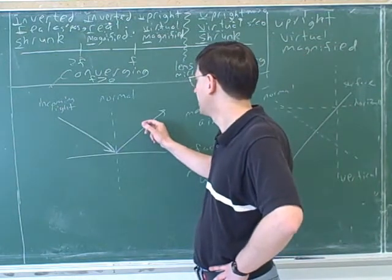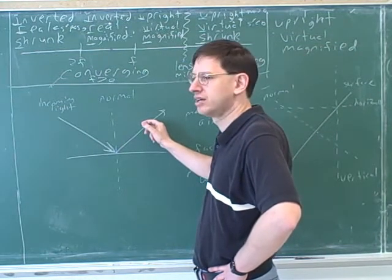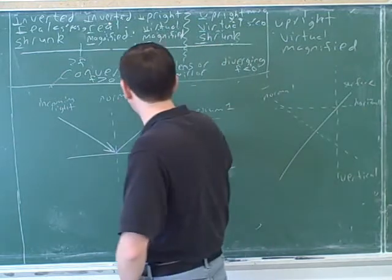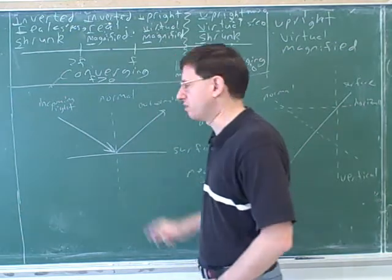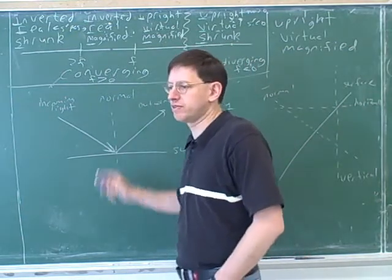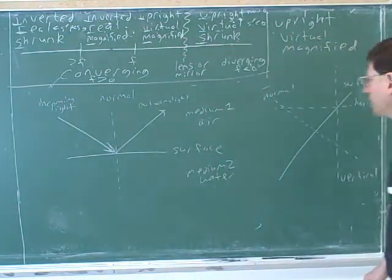What would be a good name for this line? Outgoing light. Yeah. Outgoing light. Maybe I don't need to label it because I got the arrow. But maybe I should label it anyway. So it's always good to put these arrows in so we don't confuse the incoming and the outgoing light.